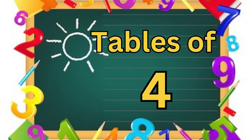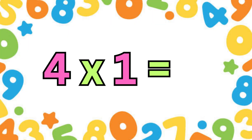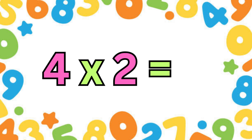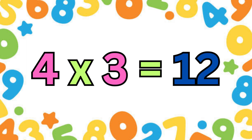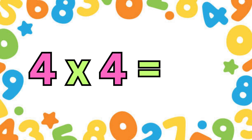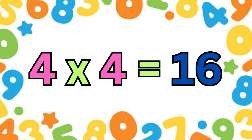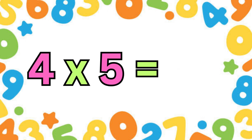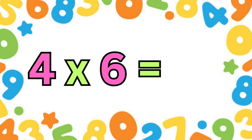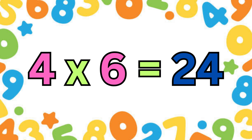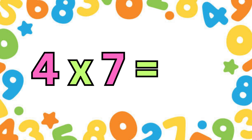Hey toties, let's learn tables of four! Four ones are four, four twos are eight, four threes are twelve, four fours are sixteen, four fives are twenty, four sixes are twenty-four, four sevens are